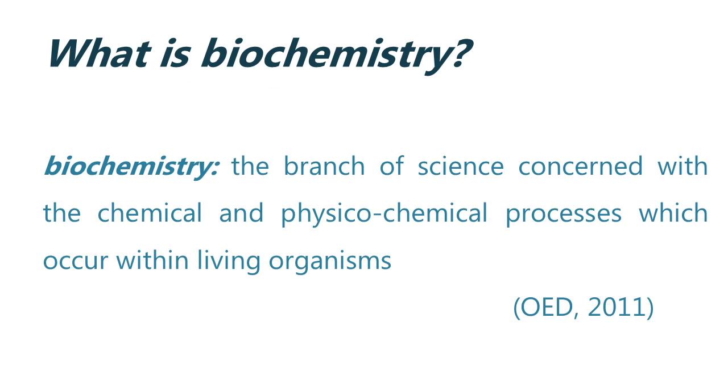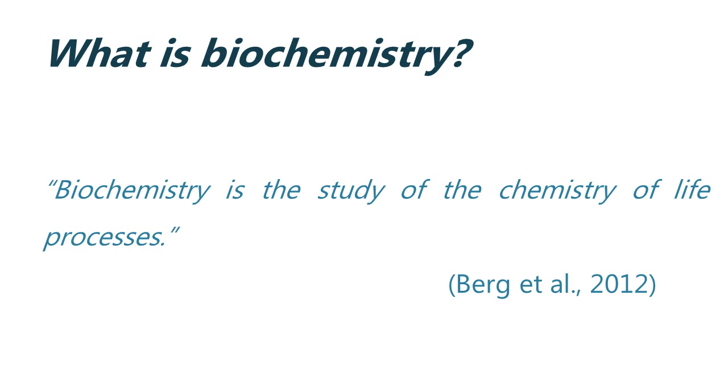So first, the Oxford English Dictionary describes biochemistry as the branch of science concerned with the chemical and physicochemical processes which occur within living organisms. So that's not overly clear. Berg and his co-authors of the textbook Biochemistry say on their first page that biochemistry is the study of the chemistry of the life processes. But what does this mean?